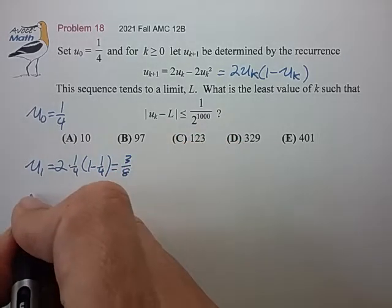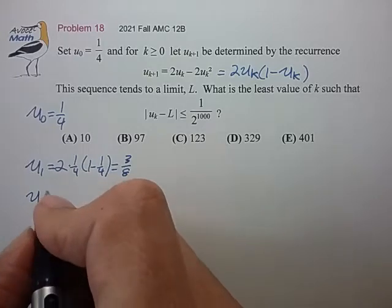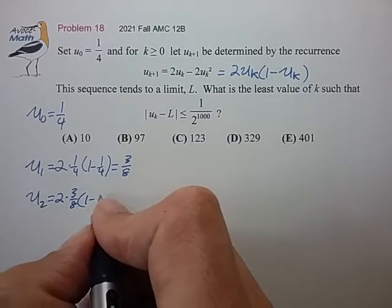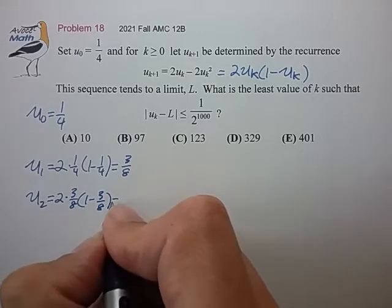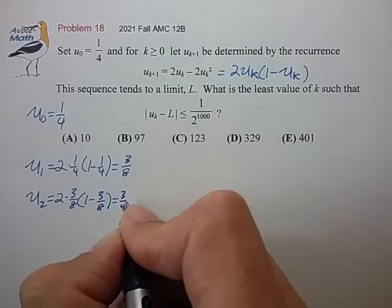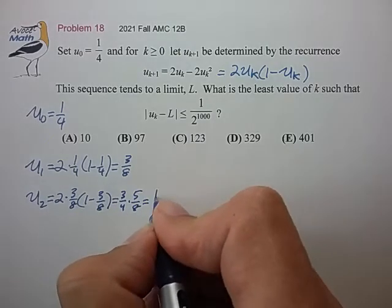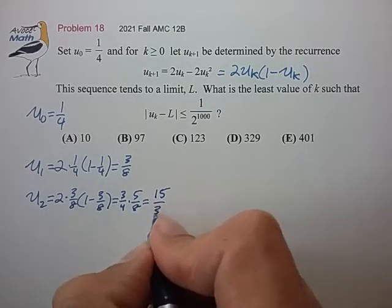So let's use the value of 3 eighths to calculate the next value. 2 times 3 eighths, 1 minus 3 eighths, 3 fourths, 5 eighths, 15 over 32.